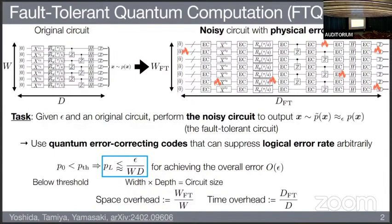In this kind of FTQC, we have basically two overheads — a cost to implement FTQC. One is the space overhead, defined by the increase in the number of physical qubits. The other is the time overhead, defined by the increase in the depth of the circuit.